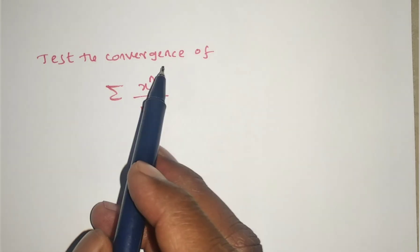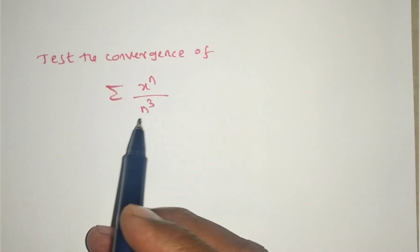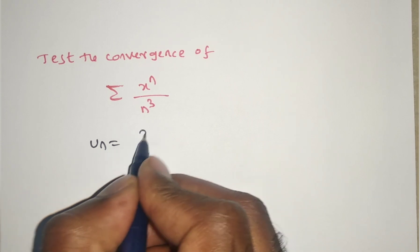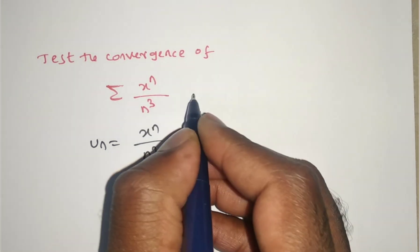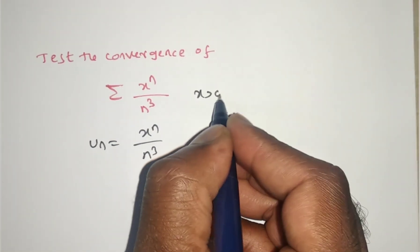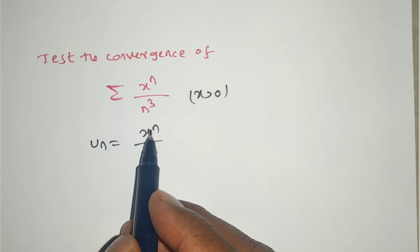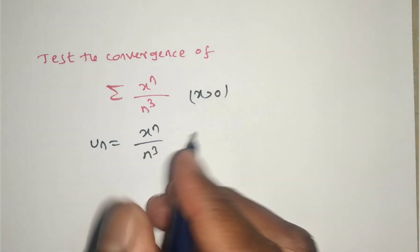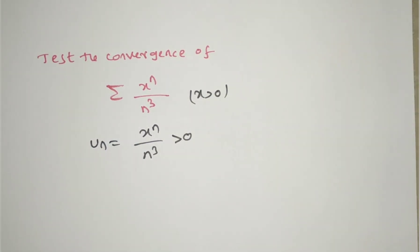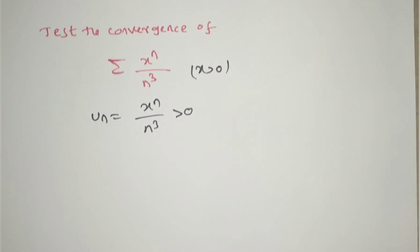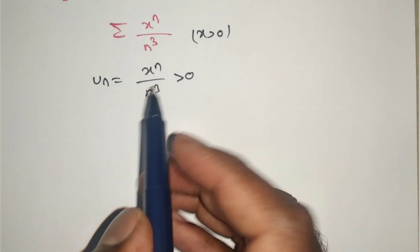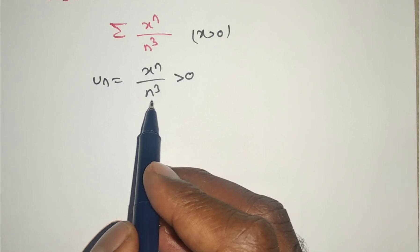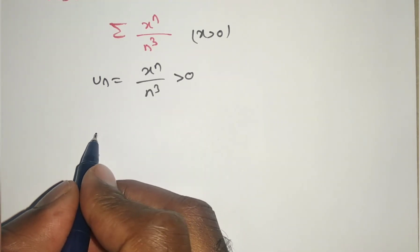Test the convergence of Σxⁿ/n³. Given uₙ = xⁿ/n³, with x > 0. Since the numerator and denominator are both positive, the given series is a series of positive terms. The series contains powers of n, so we can apply the nth root test.